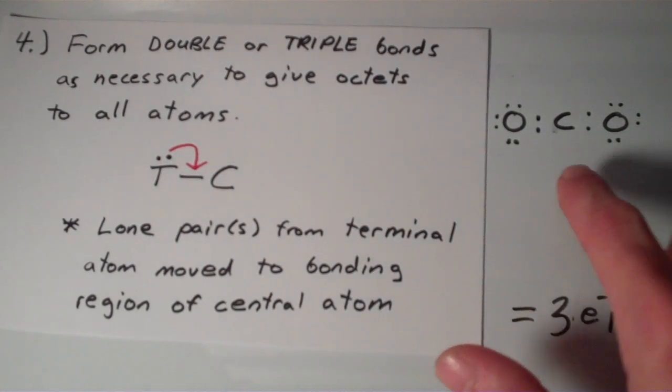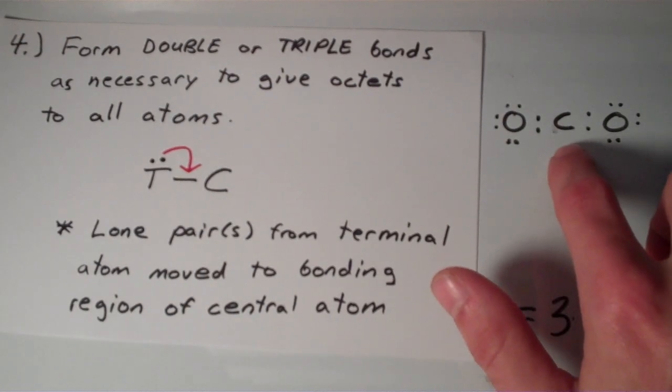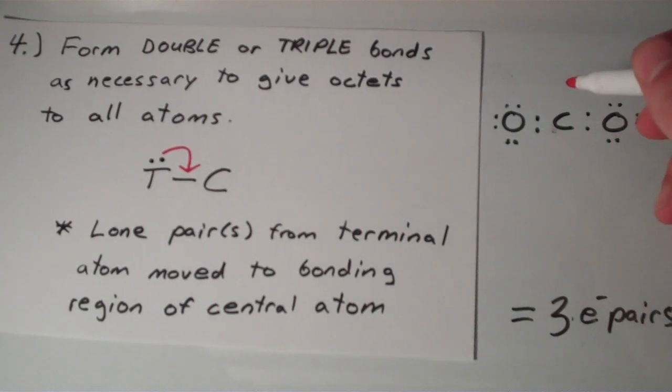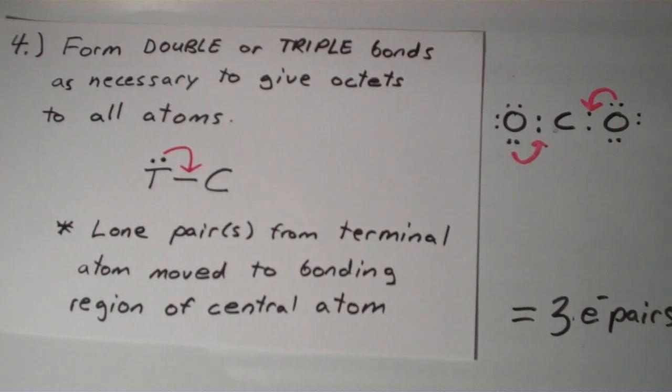And that will give octets to all the atoms. Because notice, so far, each of the oxygens has an octet, but the carbon does not have an octet. It only has 4 electrons around it. So what we can do is we can take a lone pair from this oxygen, move it into the bonding region between these two atoms. And we can also take one of the lone pairs from this oxygen and move it into this bonding region.